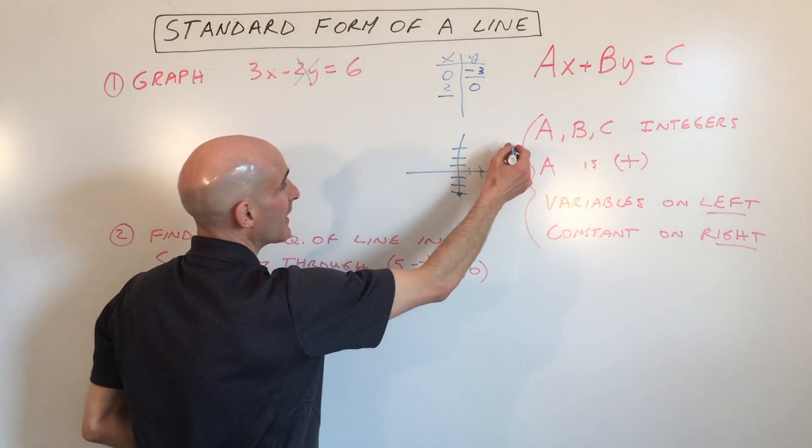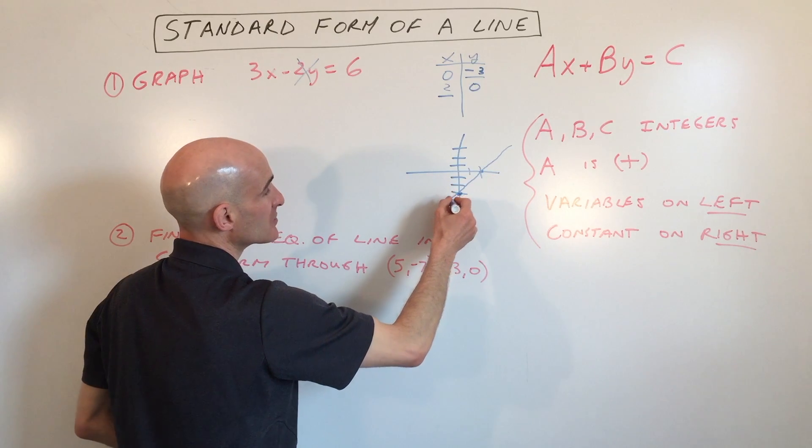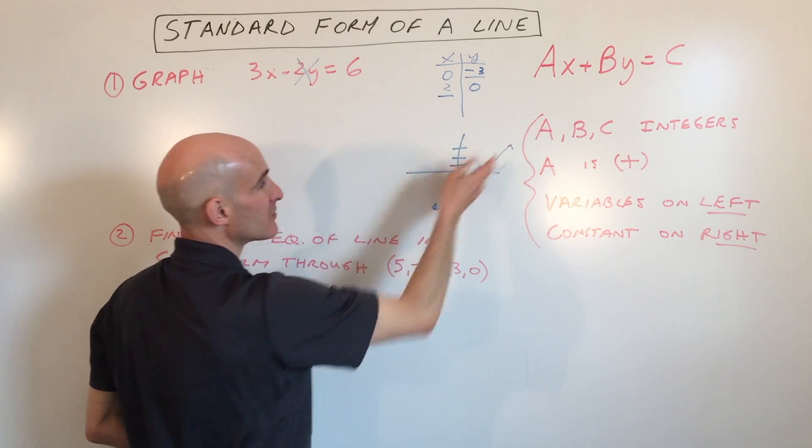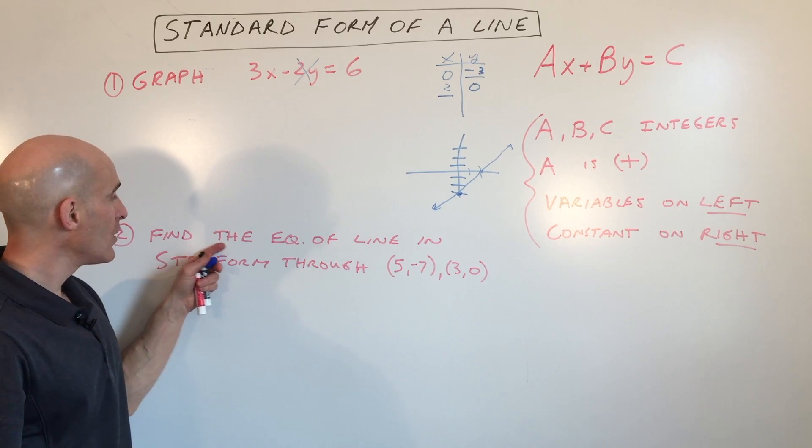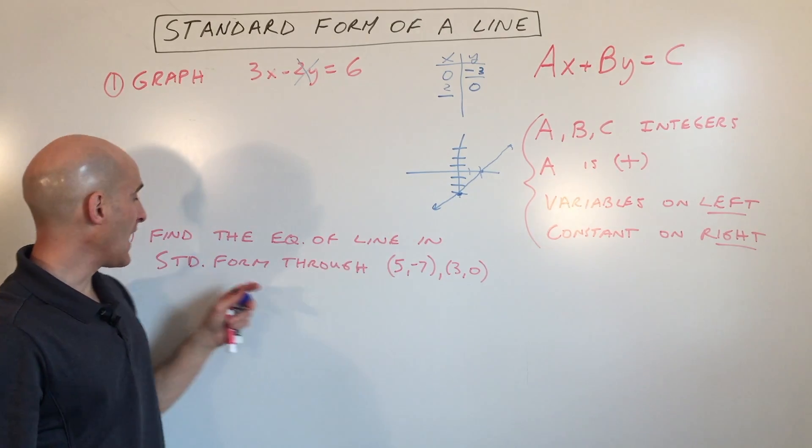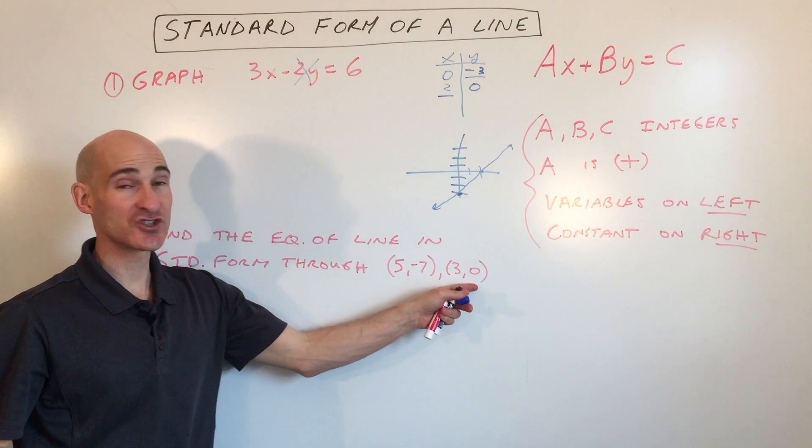Now if you know two points on the line, you can get your ruler out or your straight edge and draw the line through those two points. Now in the next example, we're going to find the equation of a line in standard form that goes through these two points.